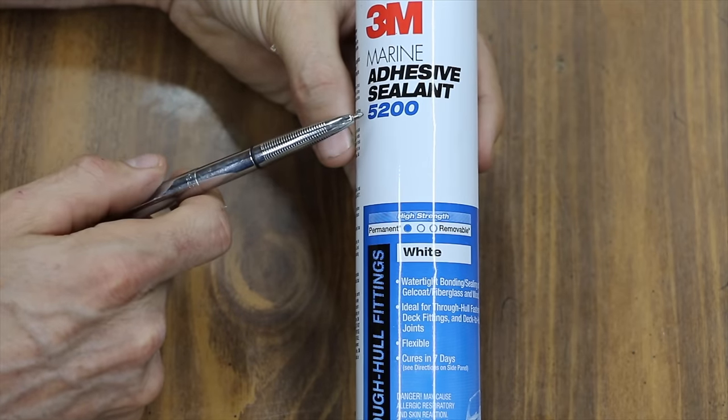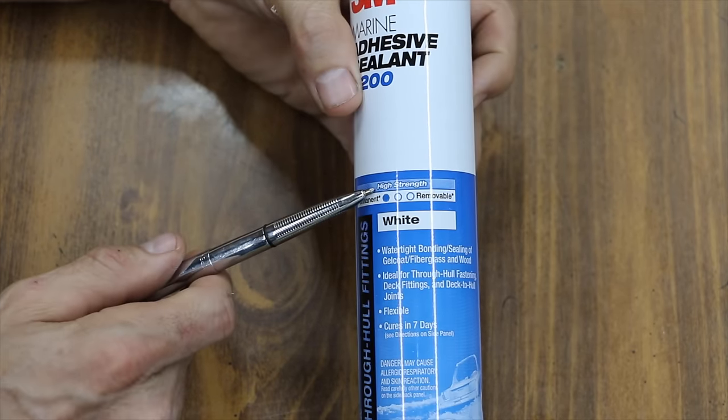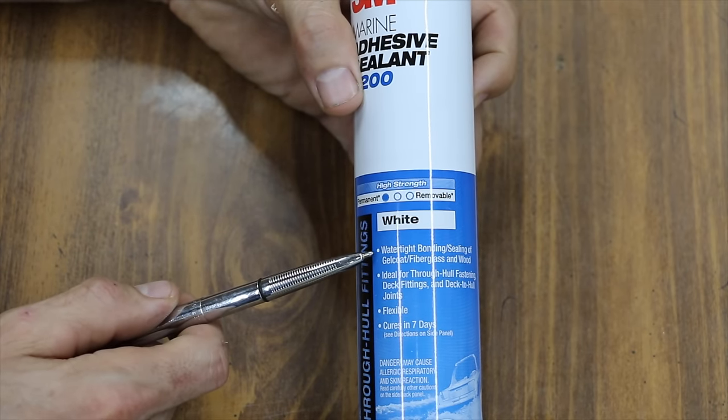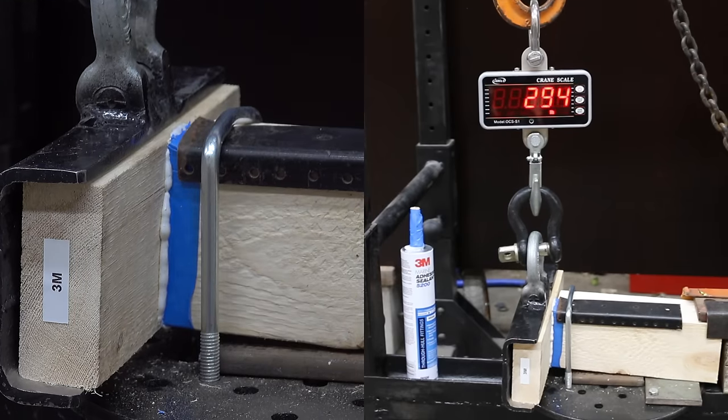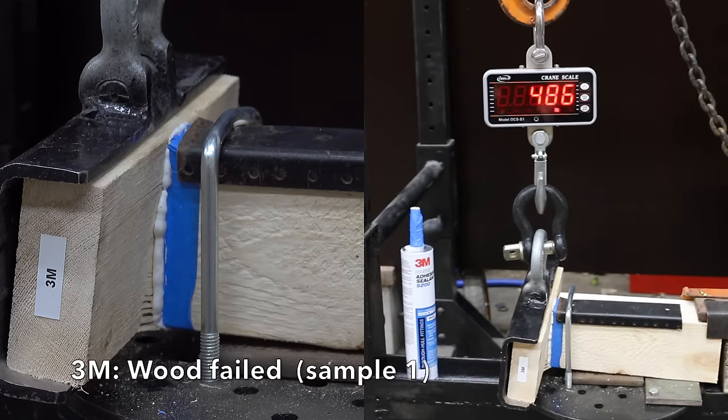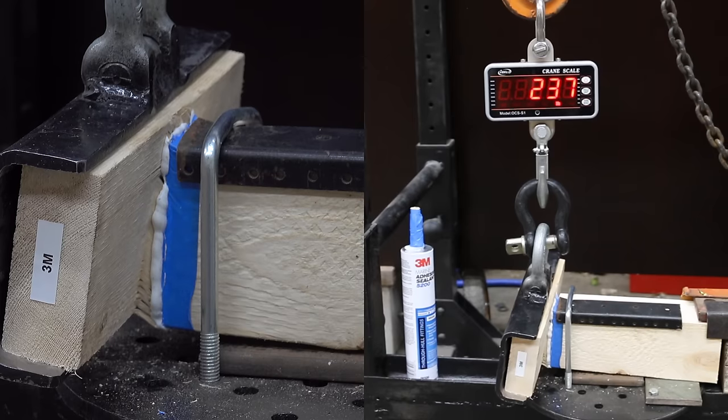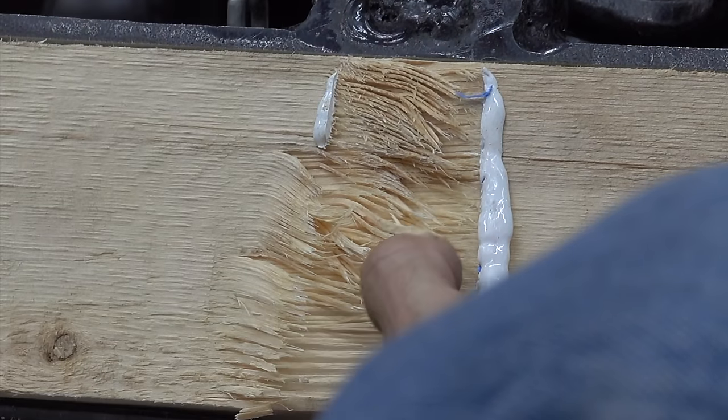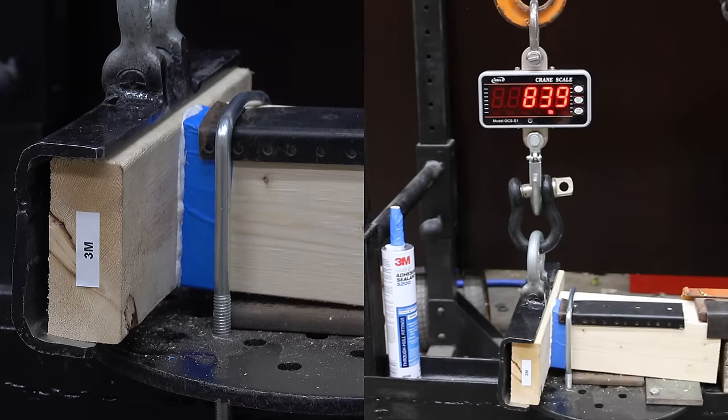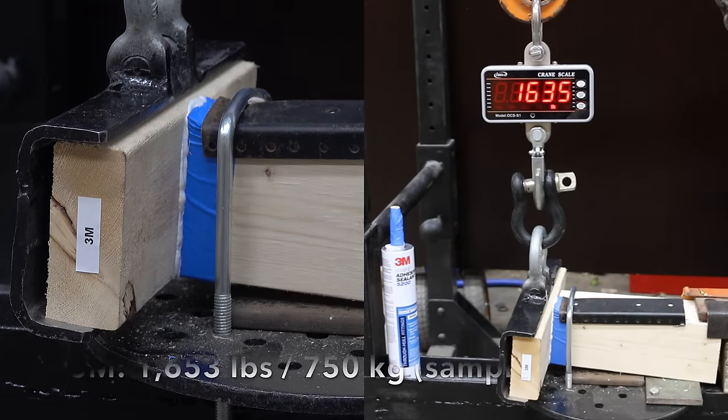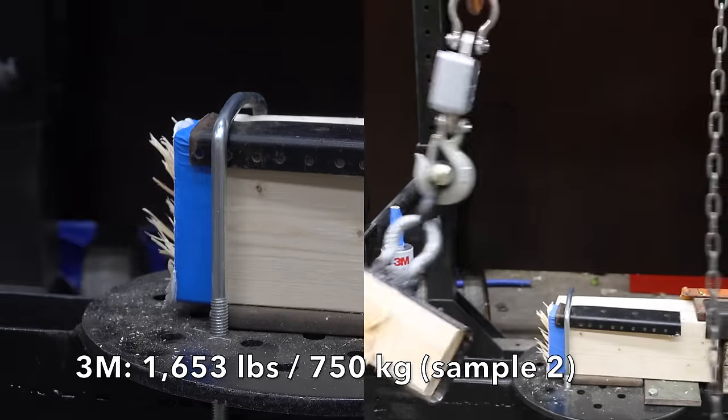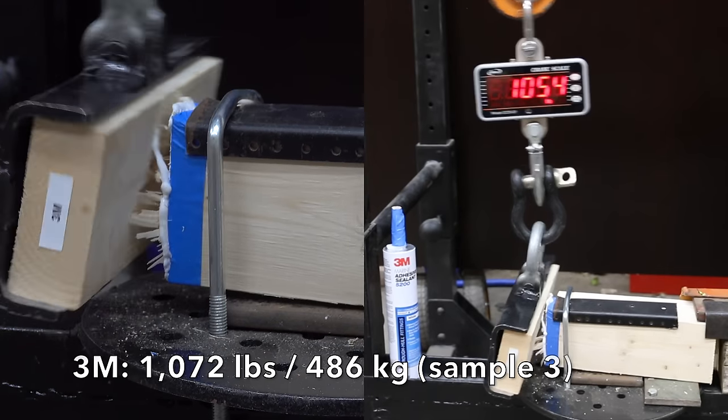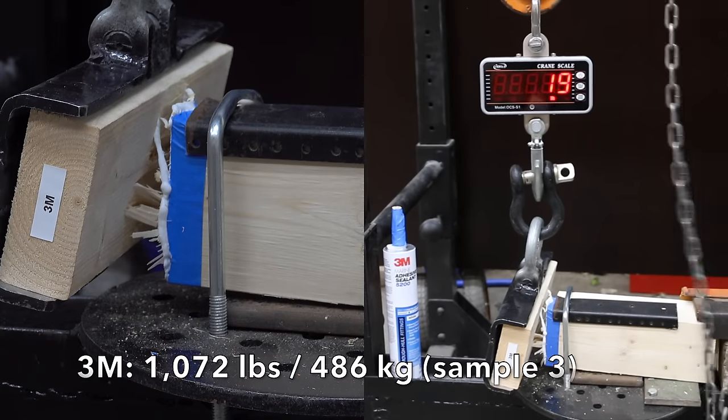3M Marine Adhesive 5200 is a highly recommended product by a lot of viewers. It's a high-strength product designed for marine applications. I'm really looking forward to seeing just how good this product is. The wood broke very early in the test. The 3M Construction Adhesive is definitely stronger than the wood. Very impressive results at 1,653. The third was down again to 1,072.